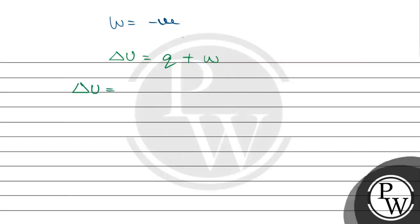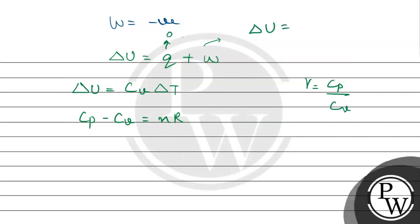The internal energy equals the heat capacity at constant volume multiplied by the change in temperature. Gamma is the ratio of heat capacities Cp over Cv. We also have the relation Cp minus Cv = nR. In the adiabatic process, Q = 0, so delta U equals the work done.